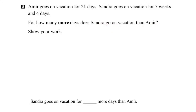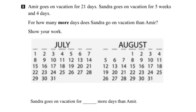Let's bring in a calendar and say that they both start their vacation on July the 1st. Amir goes on vacation for 21 days, so let's count the days that Amir is on vacation starting on July the 1st.